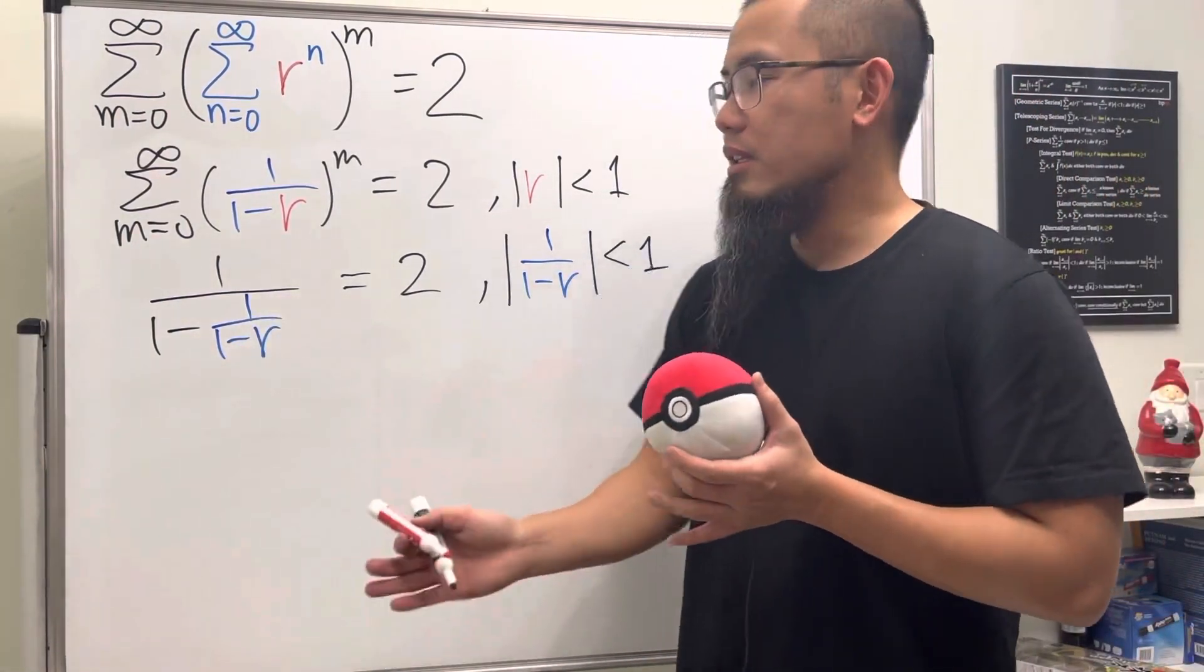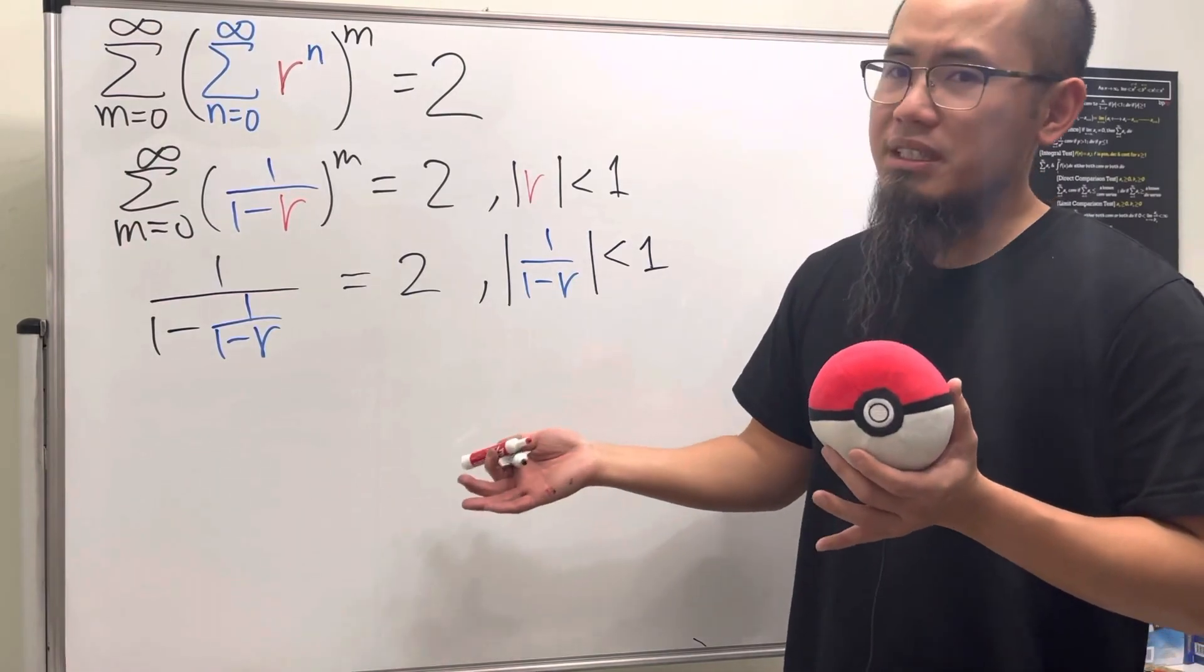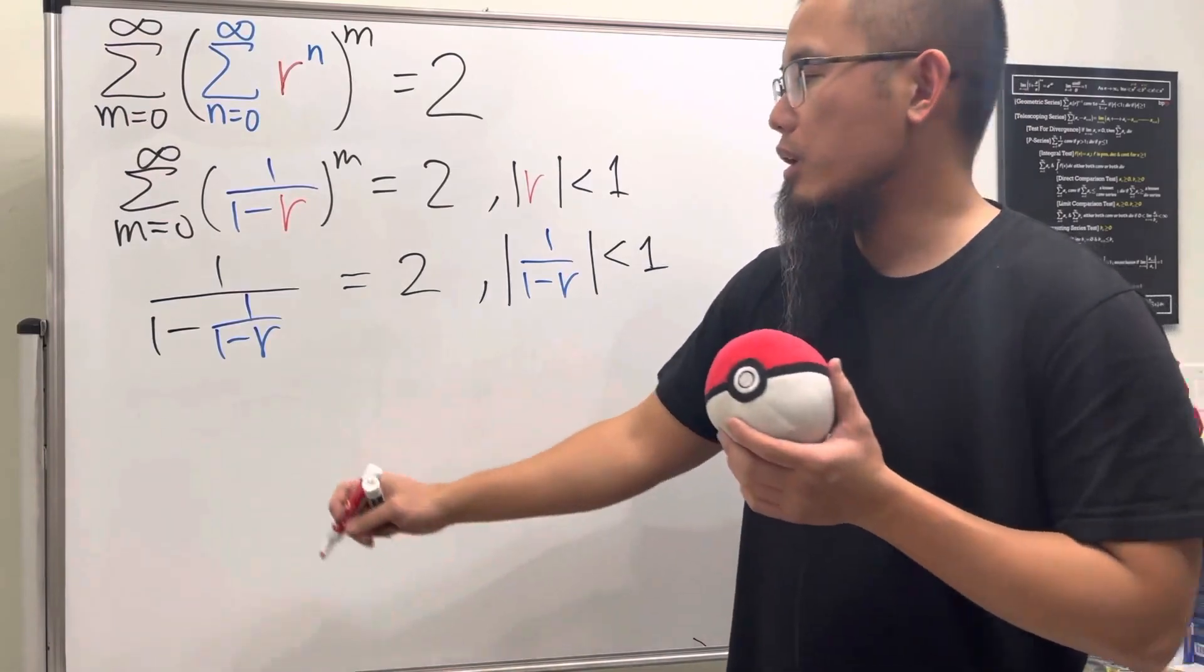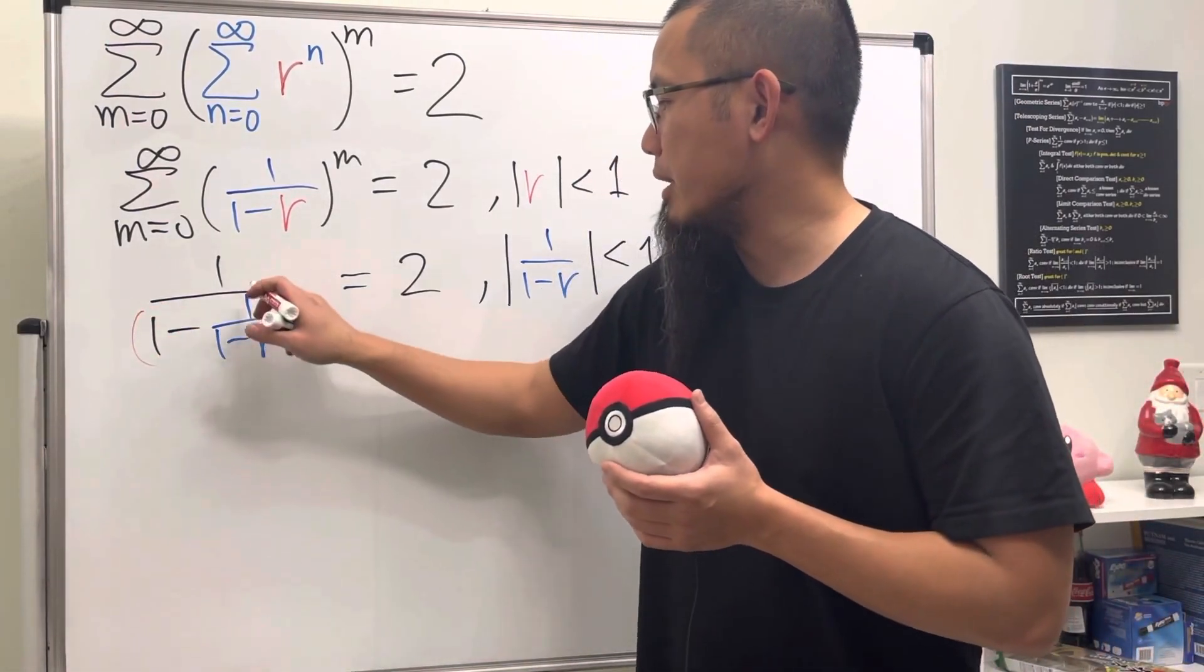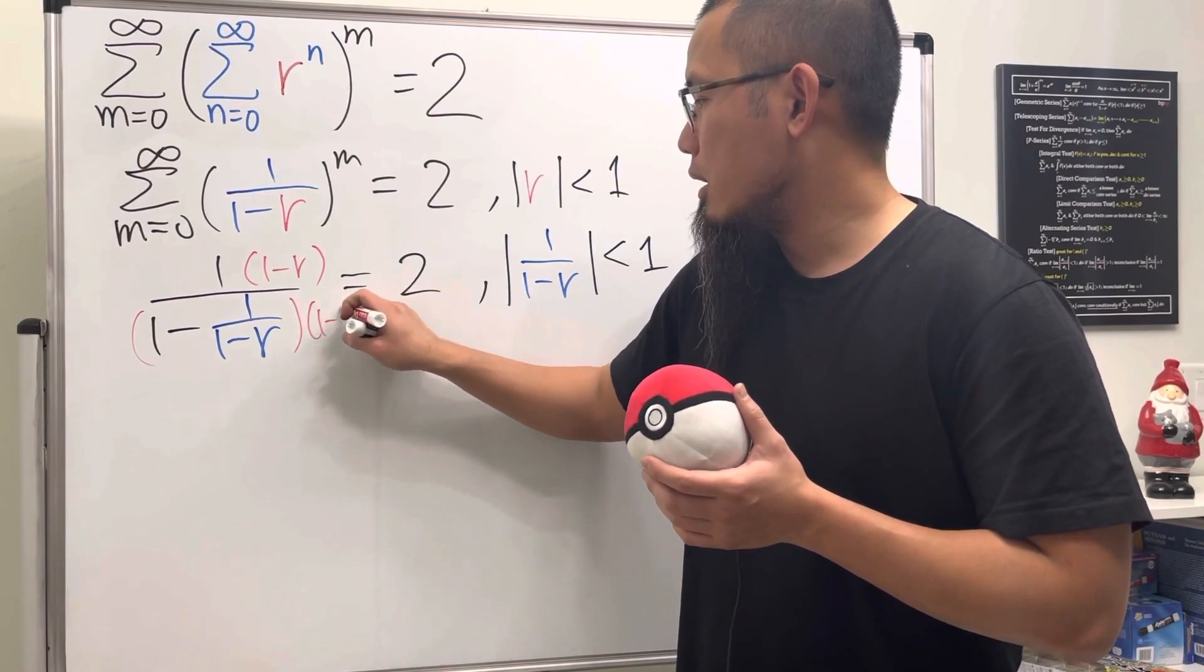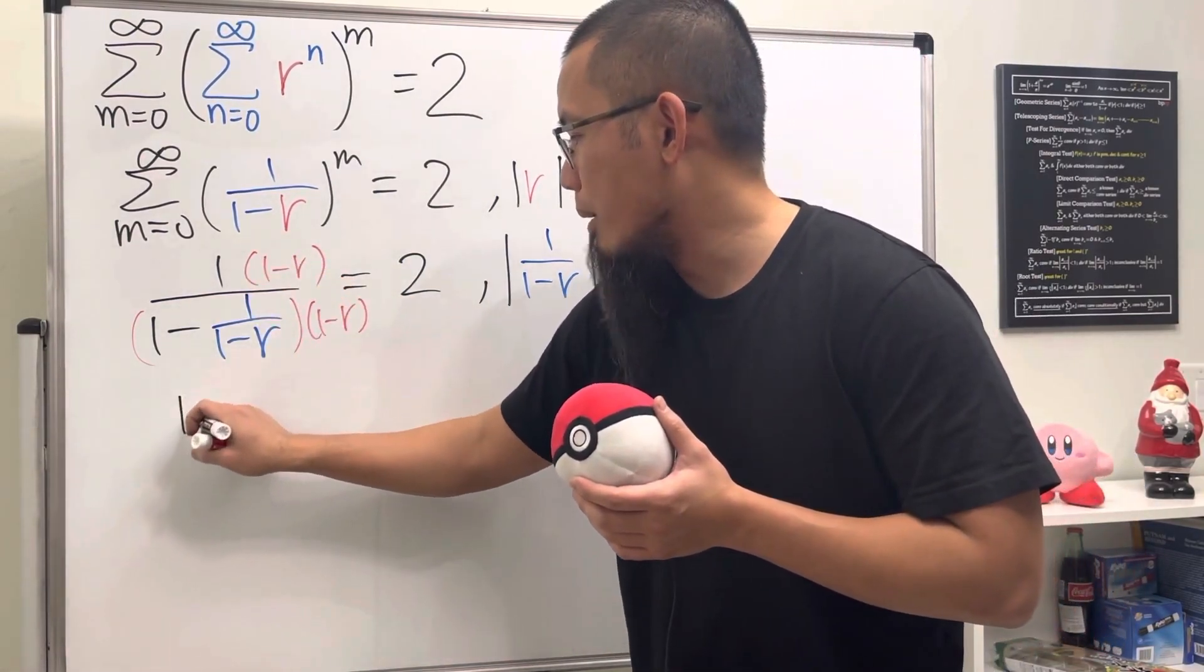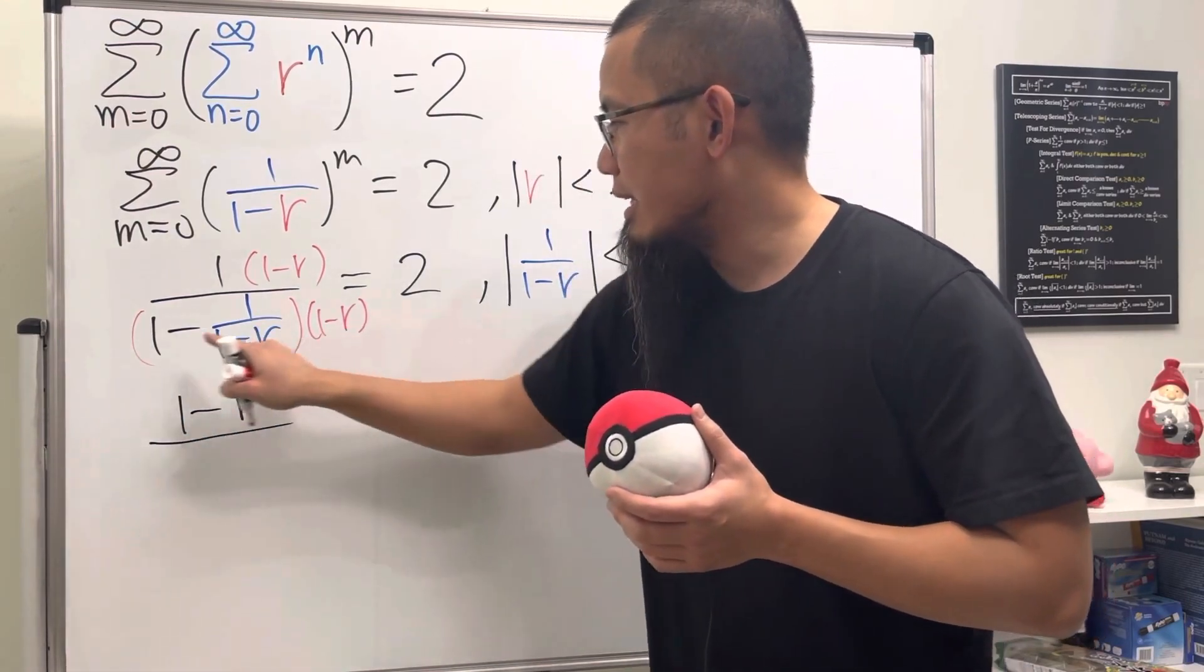Once we have this, it has a complex fraction. It's okay, we can just multiply the top and bottom by the denominator, which is just one minus r. Because this way, this and that can cancel. And you see on the top we have one minus r over this times that.